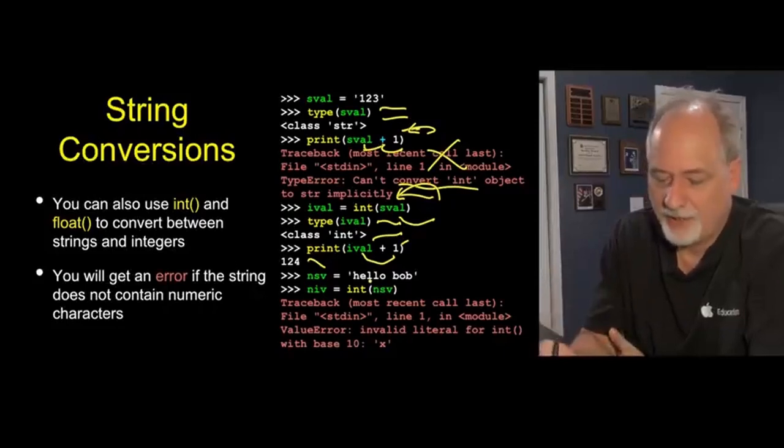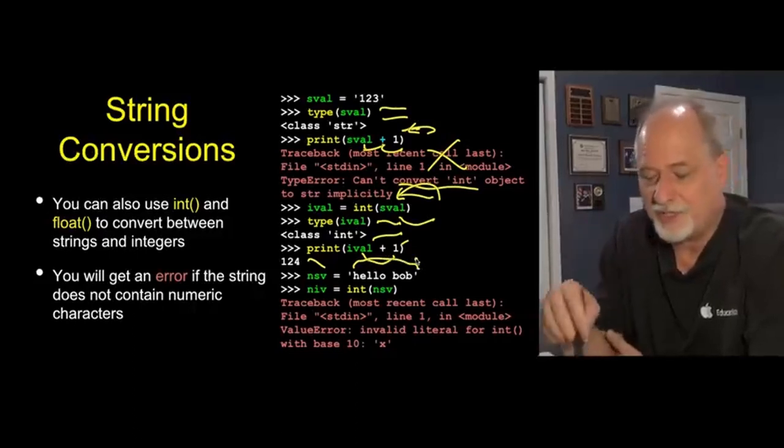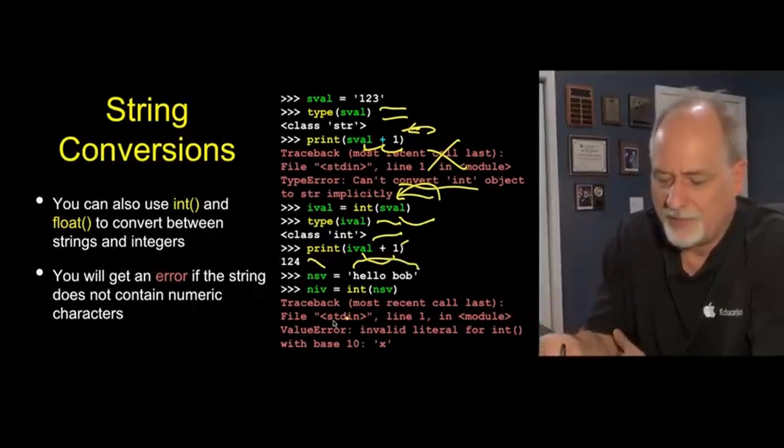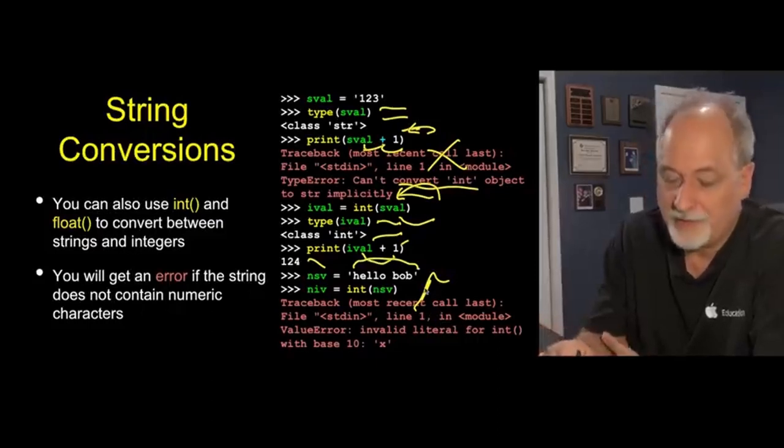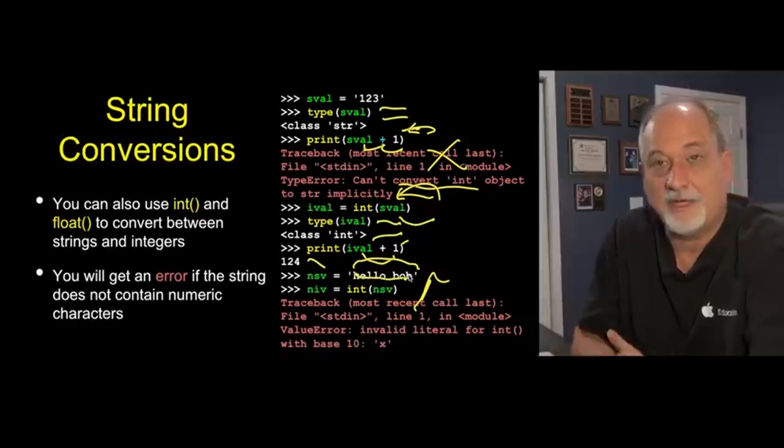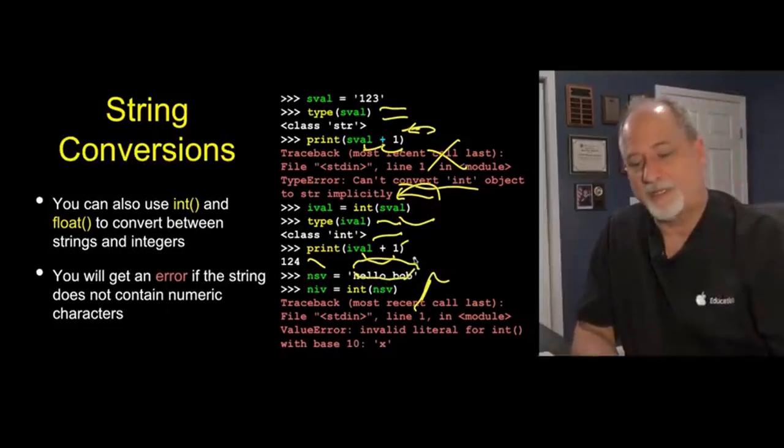Now, int is not magic. If you send something into it, a string that doesn't consist of digits, then you're going to end up with another error. Invalid literal for integer with base 10. So it's really complaining. It says, I want these to be numbers here, and you just gave me letters. So that's going to cause this to fail.